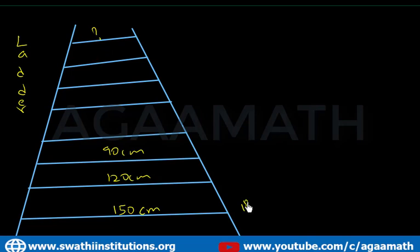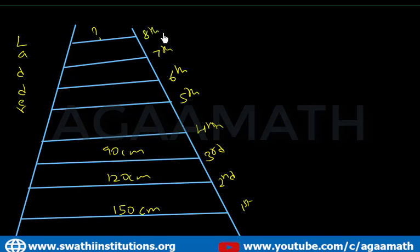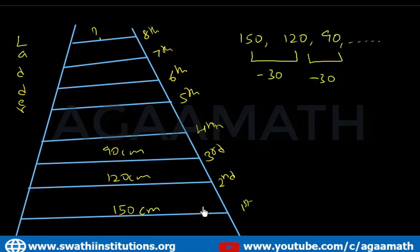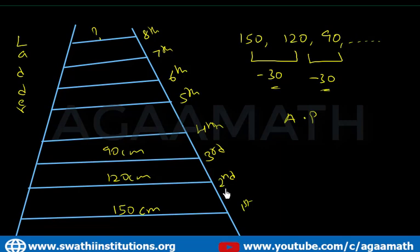If we want to find the length of the eighth bar, observe the sequence: 150, 120, 90 — the difference is minus 30 each time. The difference is constant at negative 30. Whether the difference is positive or negative, as long as it is constant, this is called Arithmetic Progression.